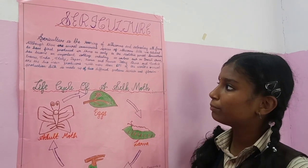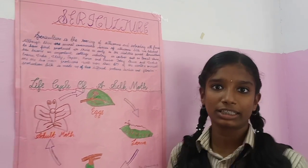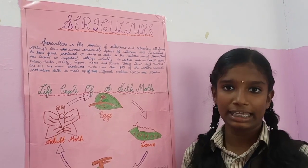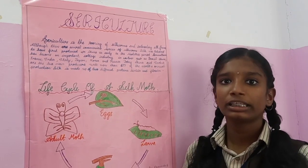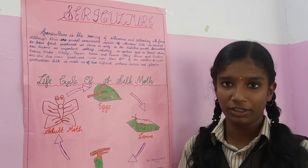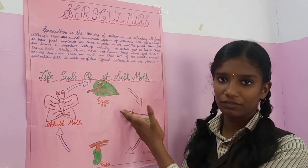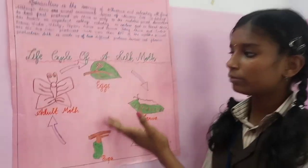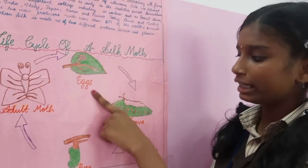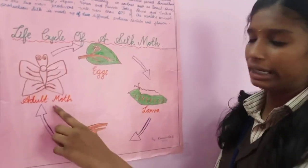Sericulture has become an important part of industry in countries such as France, India, Japan, Italy, and Korea. Now China and India are the two main producers. The life cycle of the silkworm includes four stages: egg, larva, pupa, and adult.